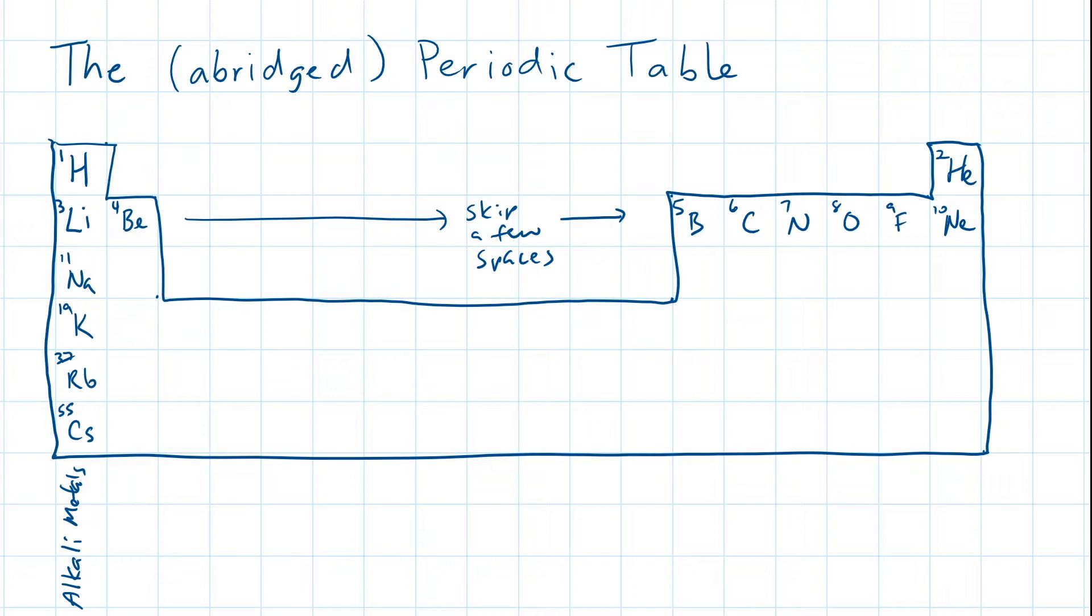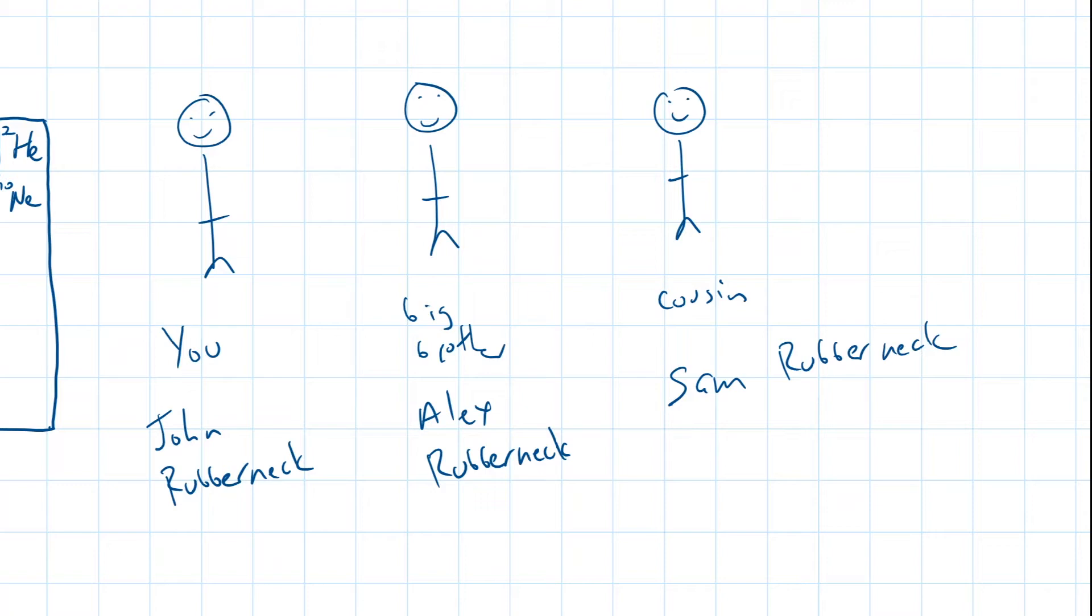In group two, beryllium, magnesium, calcium, strontium, and barium all share something in common and they're known as the family of alkaline earth metals.